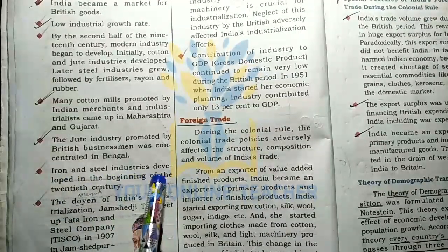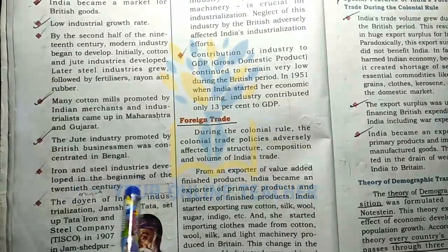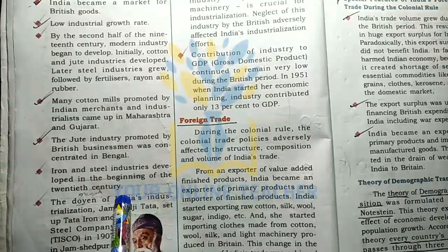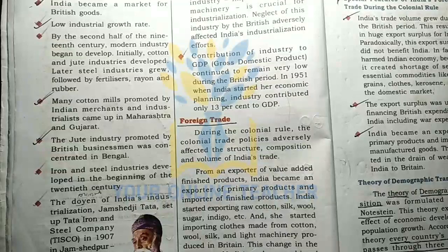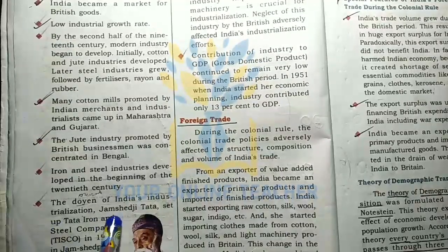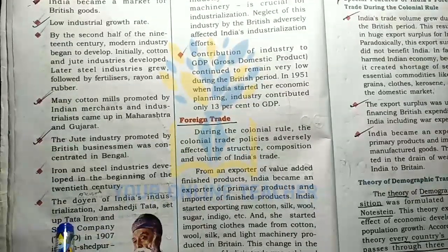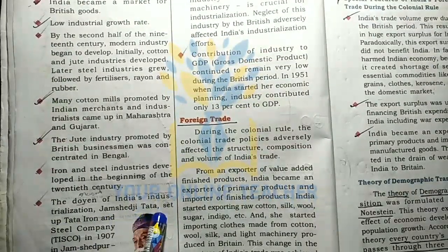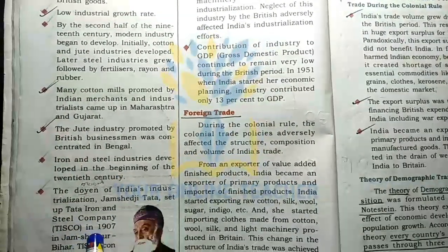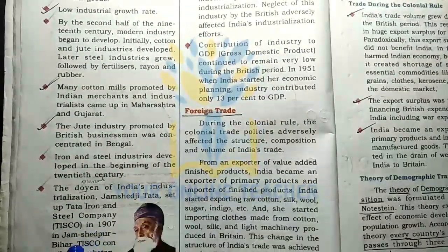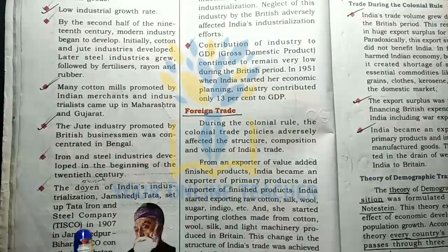The iron and steel industries developed in the beginning of the 20th century. The doyen of India's industrialization, Jamshedji Tata, set up Tata Iron and Steel Company — TISCO — in 1907 in Jamshedpur, Bihar.